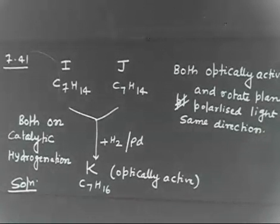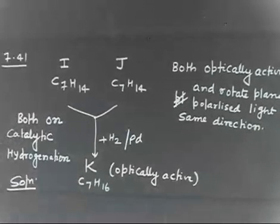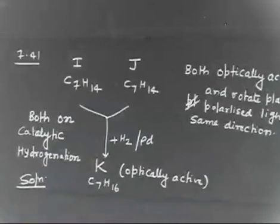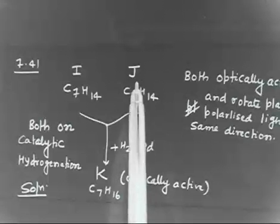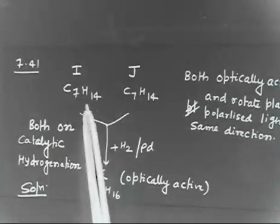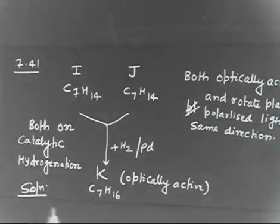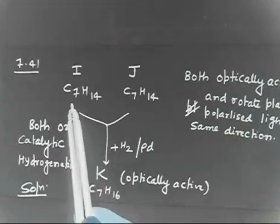Let us discuss this problem. I have two compounds I and J. These two both have molecular formula C7H14. So I and J both have the same molecular formula C7H14.